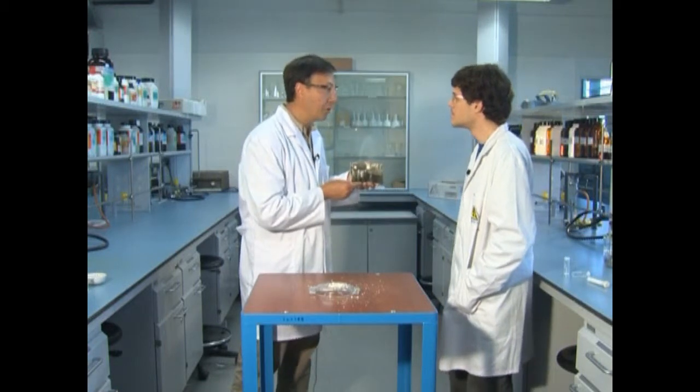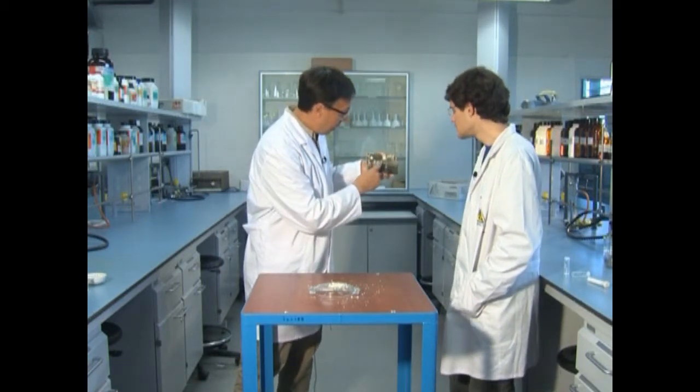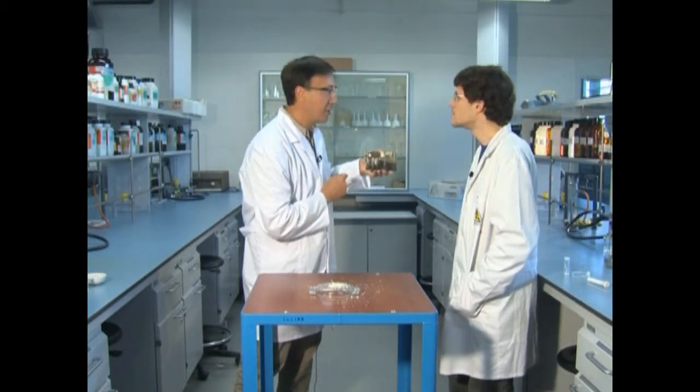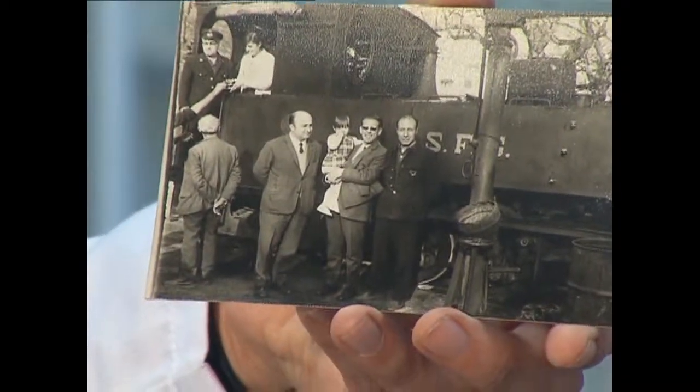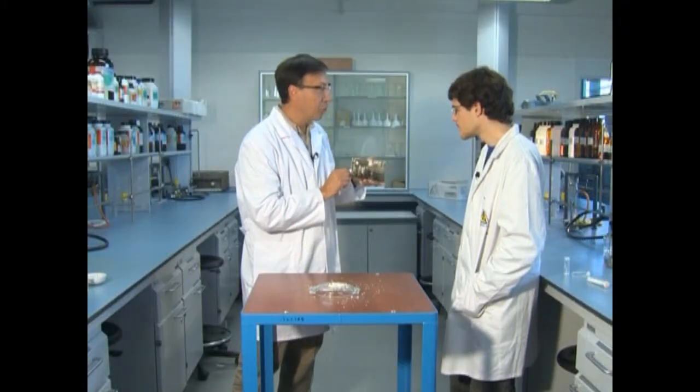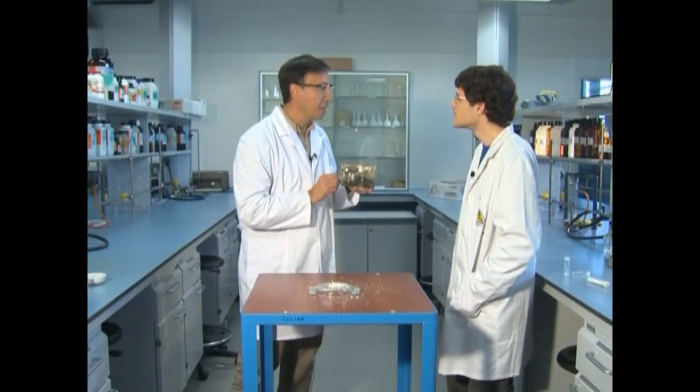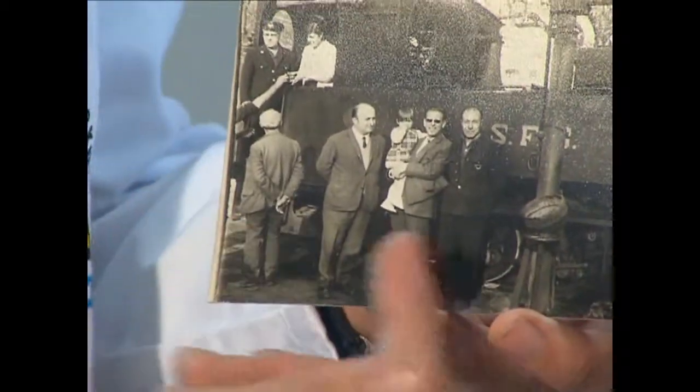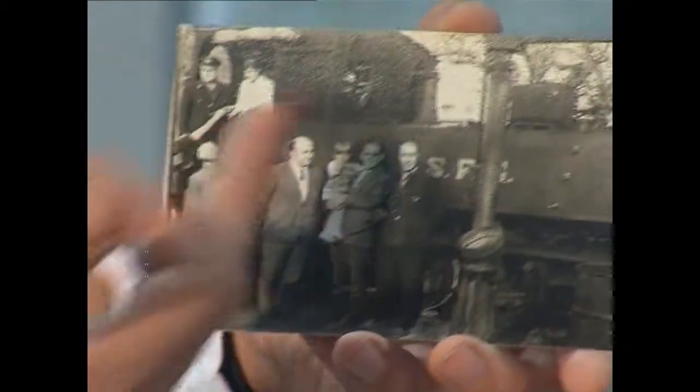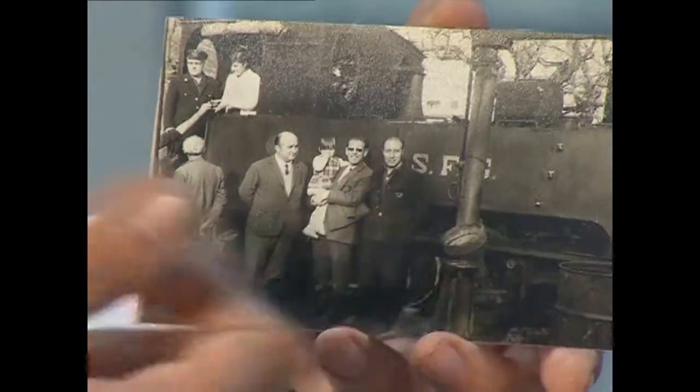Malgrat això, el brom té aplicacions interessants, com per exemple en aquesta fotografia. Mira, aquí precisament hi ha el meu pare i uns amics seus en aquesta foto de l'any 69, que era l'últim viatge que va fer al tren de Sant Feliu. En els papers fotogràfics hi ha bromur de plata. El bromur de plata s'ennegreix quan hi toca la llum i per això podem veure aquestes diferents tonalitats que van des del blanc fins al negre.